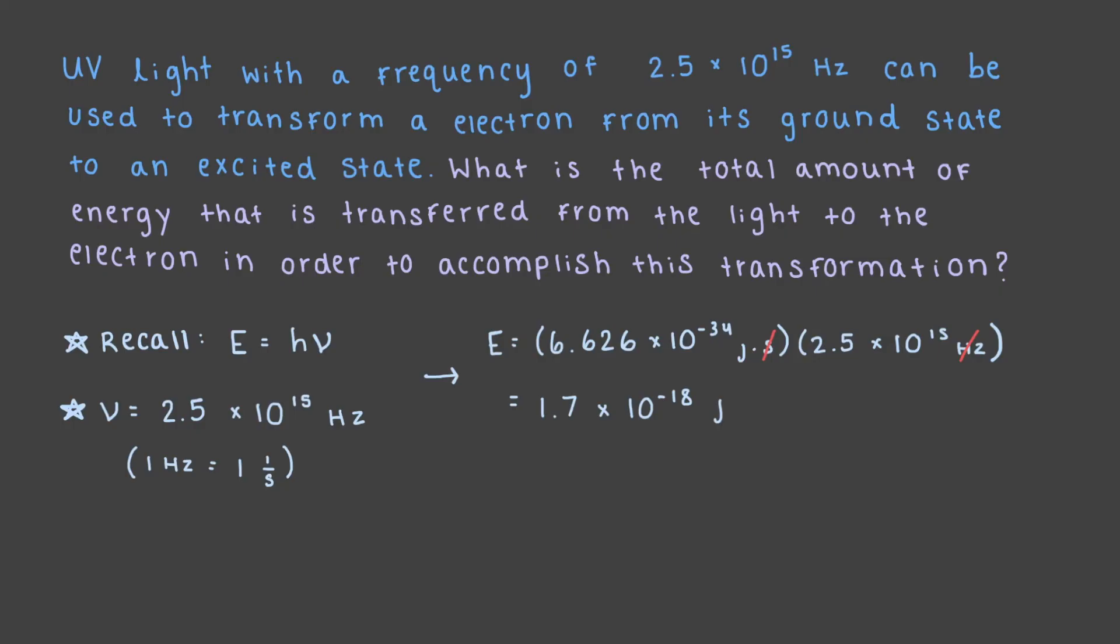This is the total amount of energy that the electron wave absorbs in order to transform from the ground state to that excited state. You'll notice that this is a pretty small amount of energy. Using attojoules instead of joules makes this answer seem more reasonable. In general, when discussing electron transformations, we usually refer to the energies in units of attojoules.